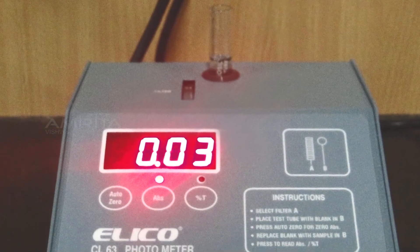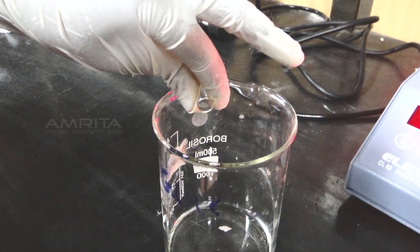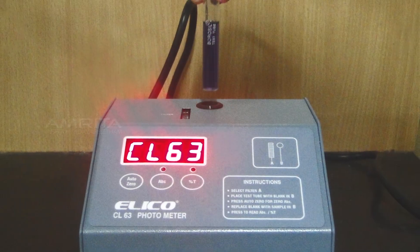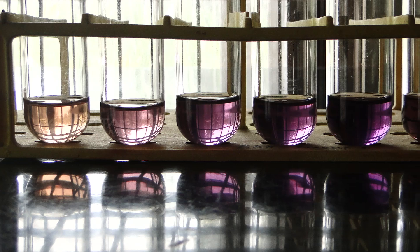Read the OD value and set the colorimeter to zero. Take out the cuvette and drain off the blank solution. Now measure the OD values of the solution from lower to higher concentration.